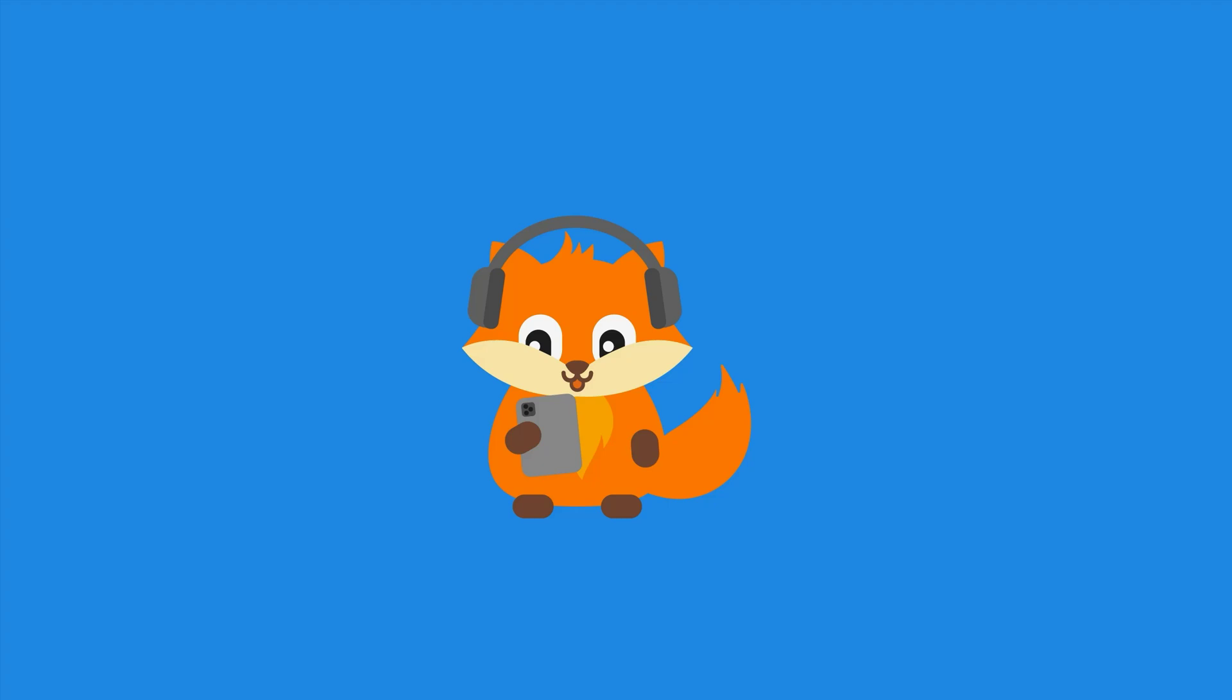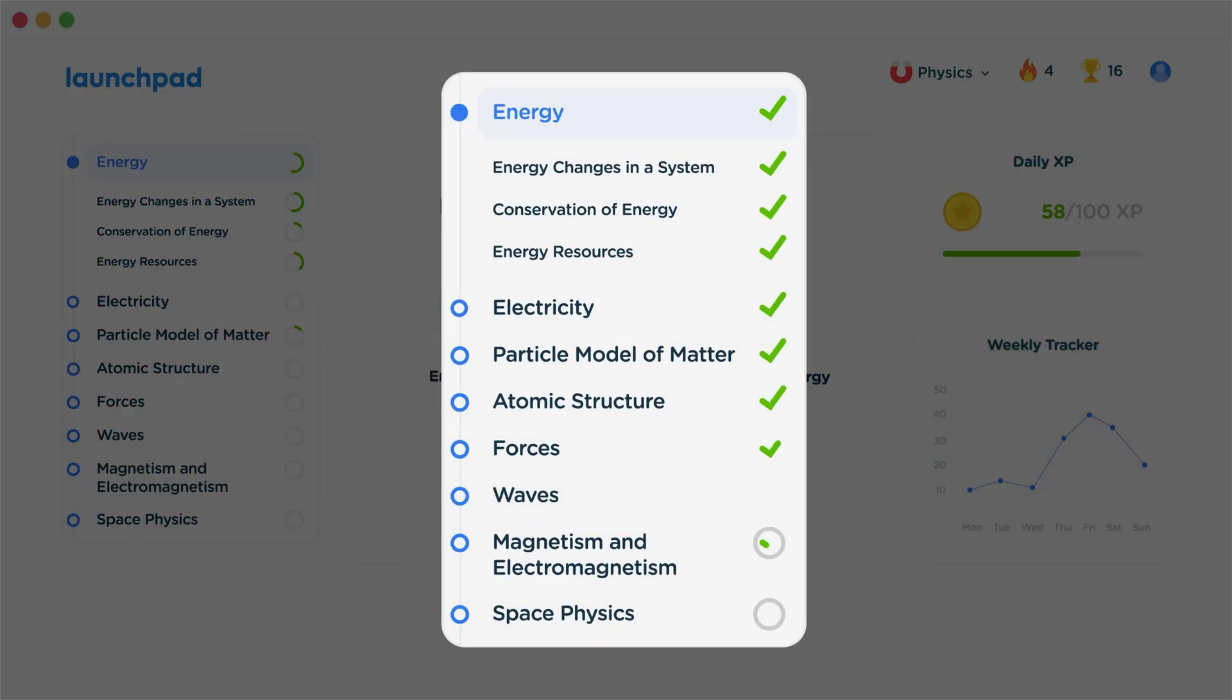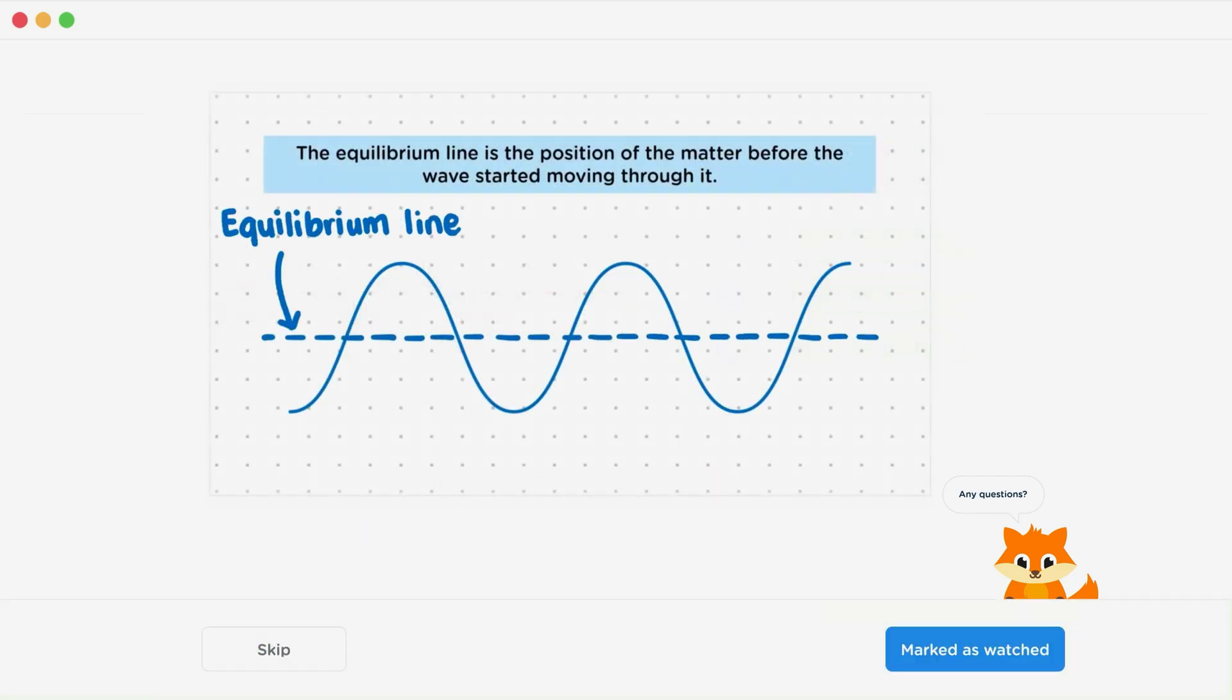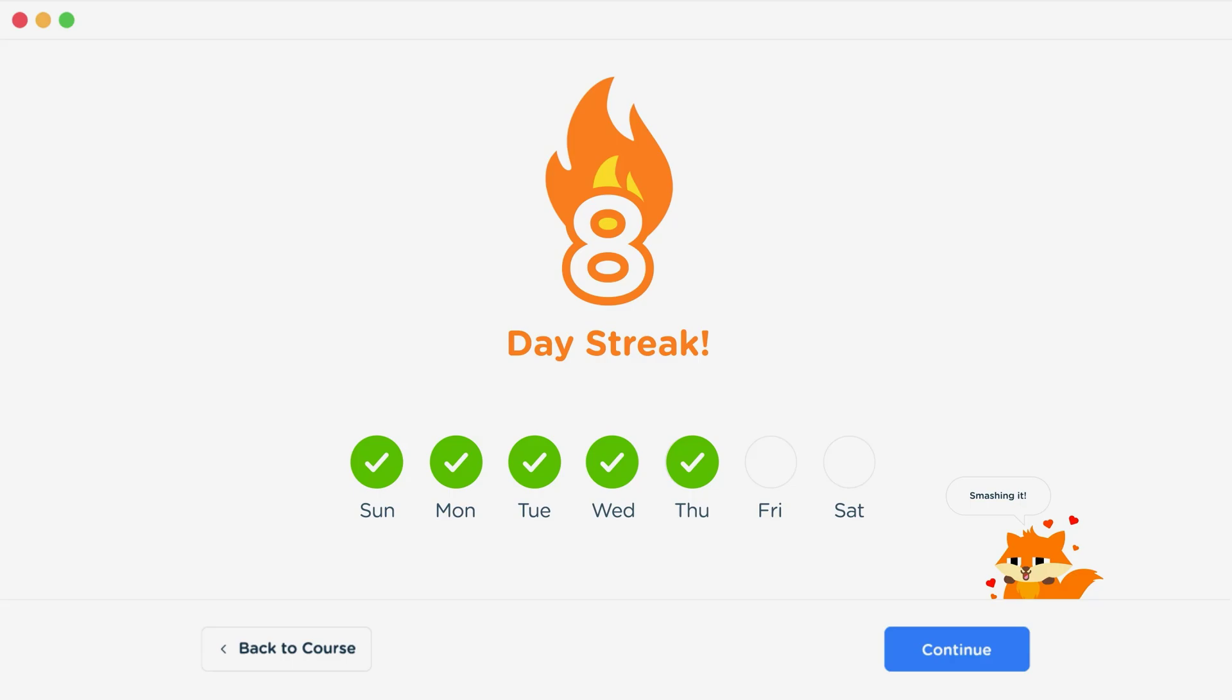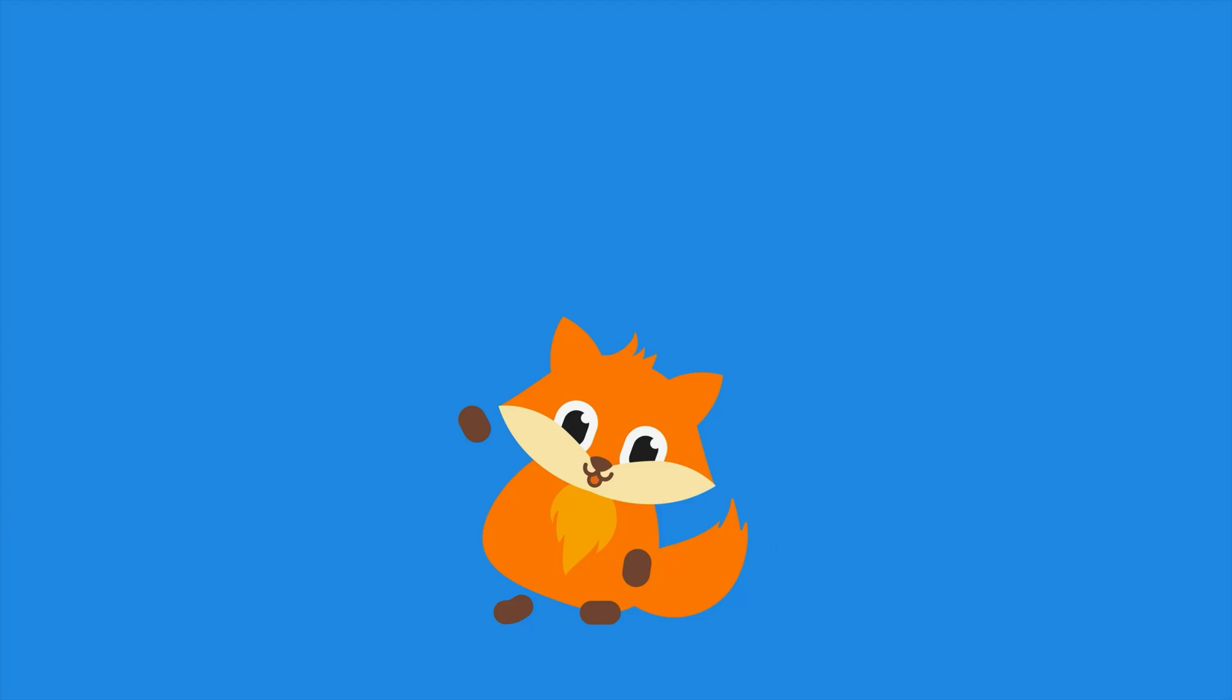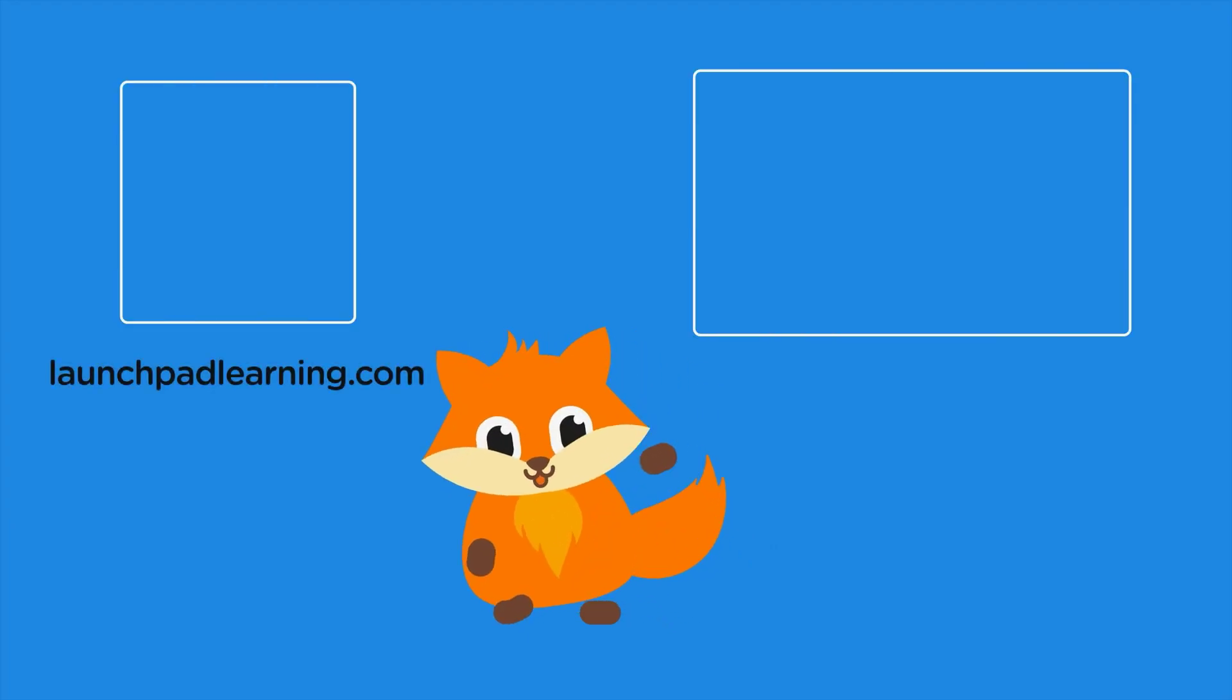If you want to take your GCSE revision to the next level, head over to launchpadlearning.com and check out our smart learning platform that's been designed to get you top results in your exams. We cover your whole specification and make revision fun with interactive quizzes, easy-to-follow videos, and more. You'll be kept motivated by your own AI tutor who's here to support you every step of the way. Click here to check it out or keep watching our full GCSE Physics course. See you there!